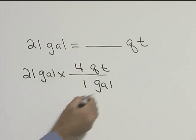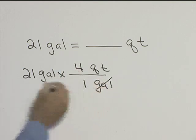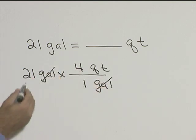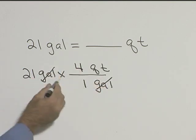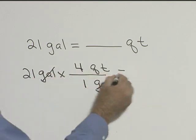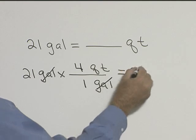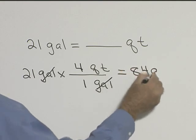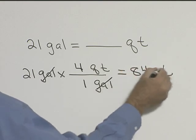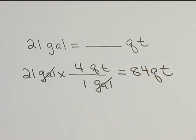It would be four. So we cancel our gallons, and 21 times 4 quarts gives us 84 quarts. So 21 gallons is the same thing as 84 quarts.